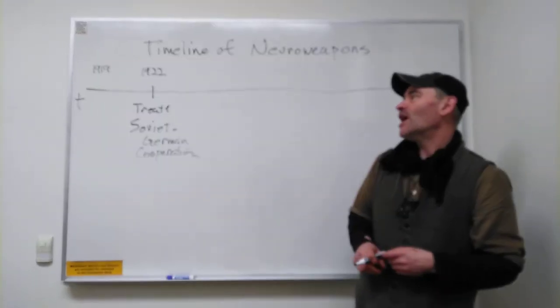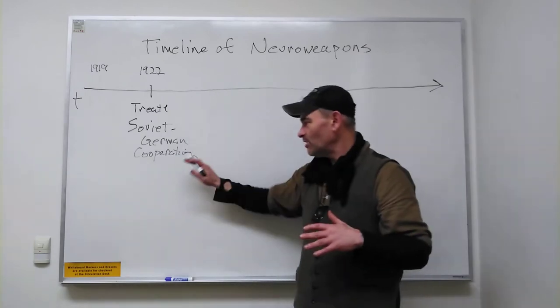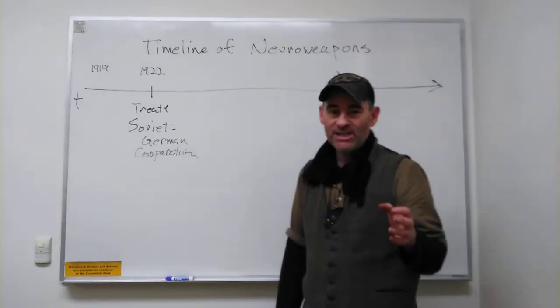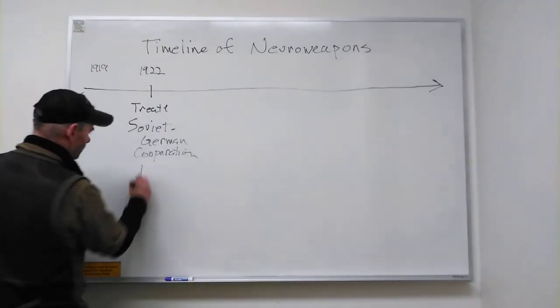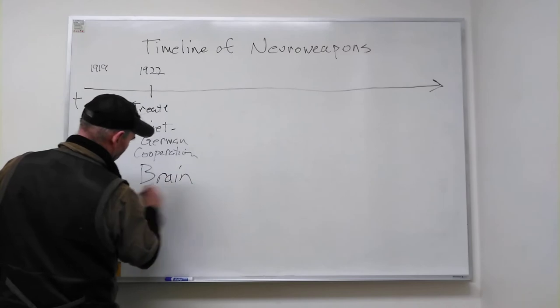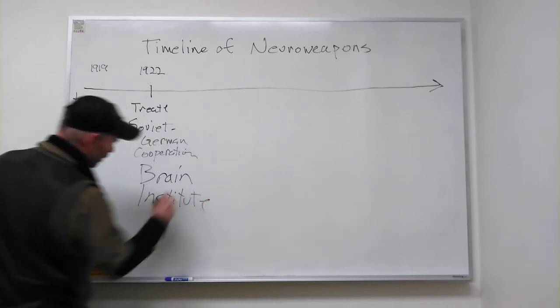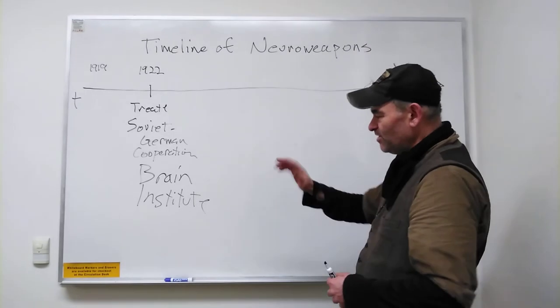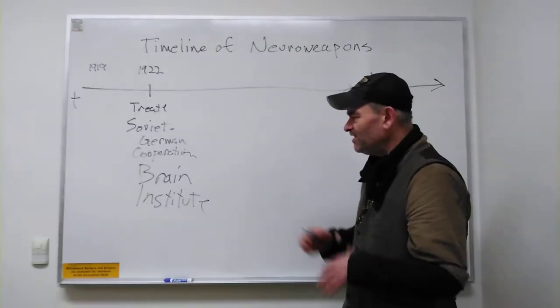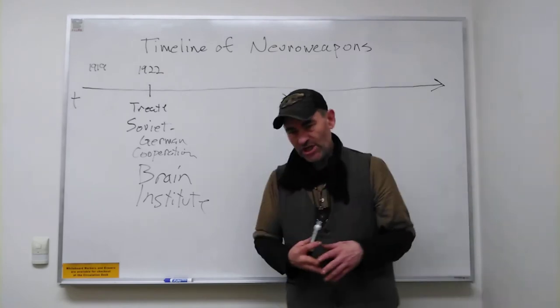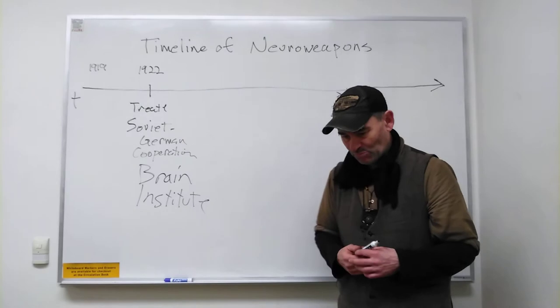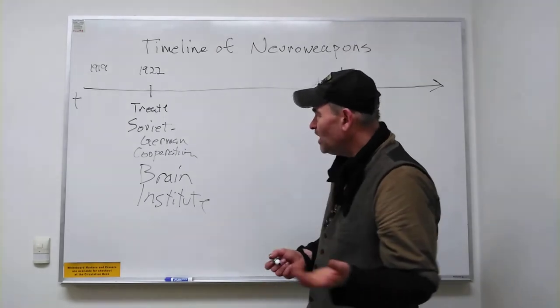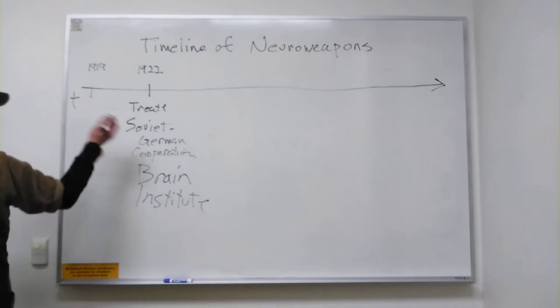What is significant along with this Soviet-German cooperation is the founding in Moscow and in Berlin of what's known as the brain institute. The brain institute obviously studies brains, but the one in Moscow did some of the earliest research in the topics of neural weapons—how they could be used. It was under the guise of what they would call remote influencing. This involved the study of telepathy, which actually begins all the way back here.